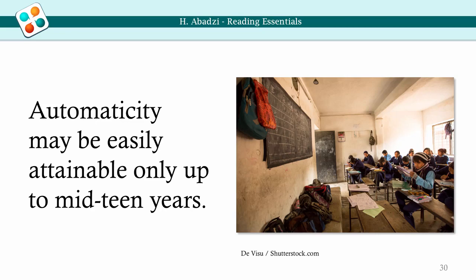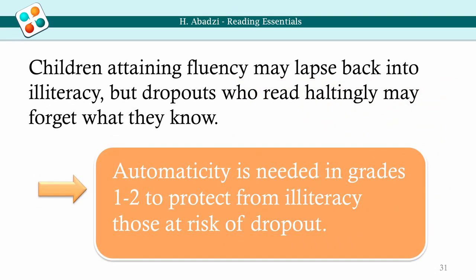Ability to attain fluency becomes difficult after age 18. Some circuits related to the visual word form area may have a sensitive period and decline in function during mid-adolescence. Adult participants and graduates of literacy courses remain halting readers who process little text with difficulty. This is one of many reasons why automaticity must be attained in childhood. Children that attain fluency and continue to read do not normally lapse back into illiteracy. Fluent readers who drop out may maintain or improve reading skills, but halting dropouts may forget what they knew. Eventually, automaticity becomes permanent, though research is needed to understand the prerequisites of permanence.